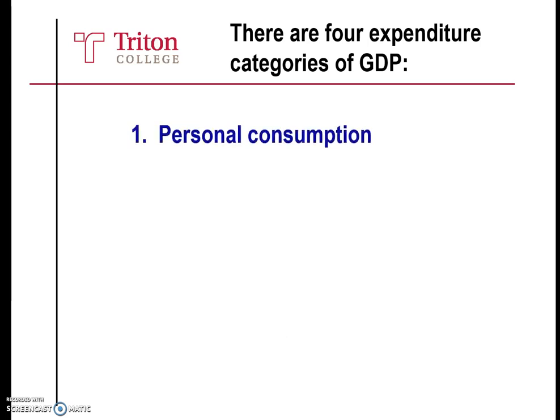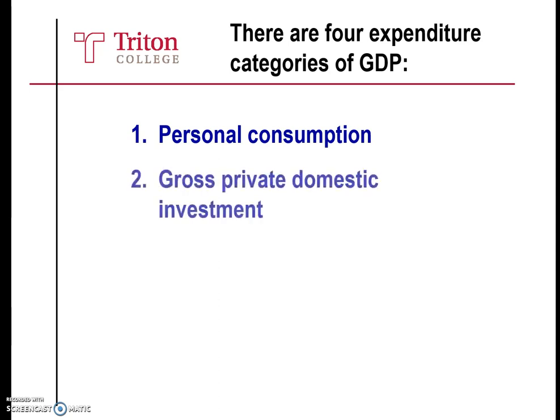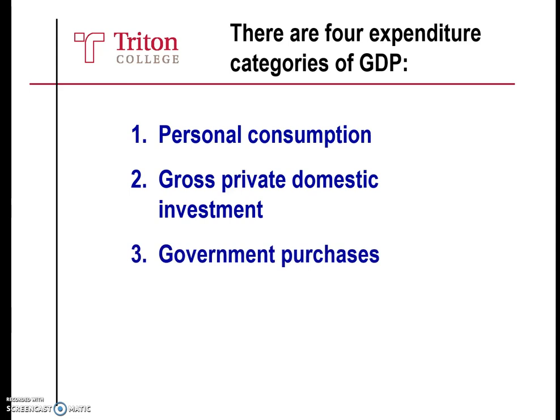The four categories or sectors in GDP on the demand side are: one, personal consumption; two, gross private domestic investment; three, government purchases; and four, net exports.